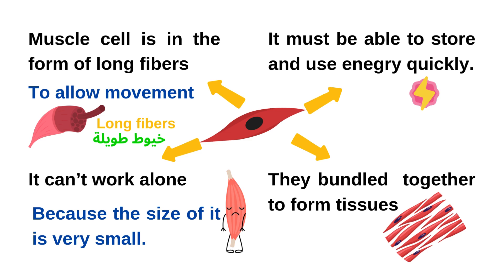We have another reason: the muscle cell is in the form of long fibers. This form — long fibers — allows movement. So this is a characteristic of the muscle cell: it is in the form of long fibers, it can store and use energy quickly. And since muscle cells can't work alone, they are bundled together to form tissues. Why can't muscle cells work alone? Because the size of each cell is very small. These are the characteristics that must be in muscle cells to perform their function.